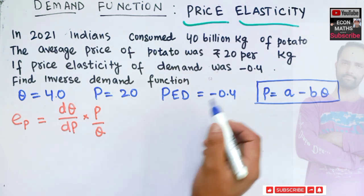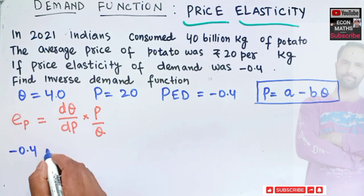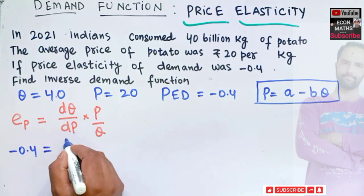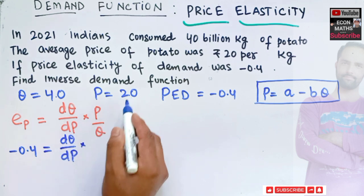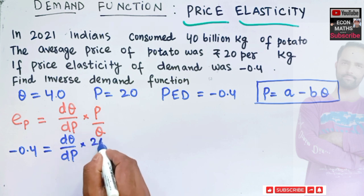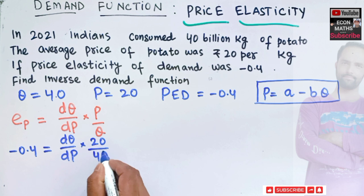Now, price elasticity of demand is being told, it is minus 0.4. So in place of this EP, we have minus 0.4 should be equal to dQ upon dP. And price is being given as 20, and output is being given as 40. So these two zeros will get cancelled. We are left with 2 upon 4.